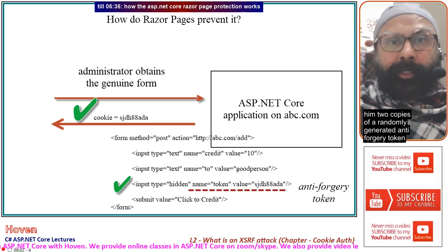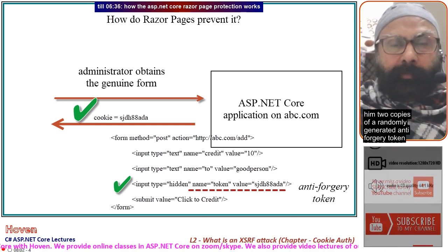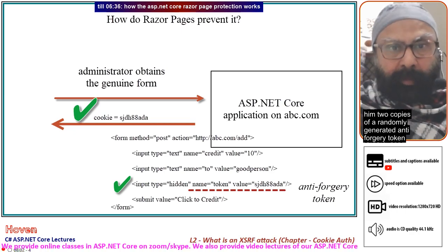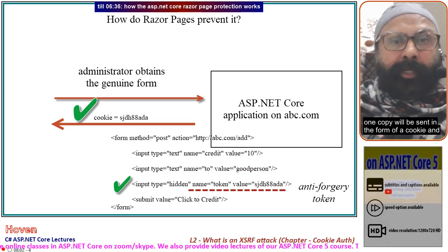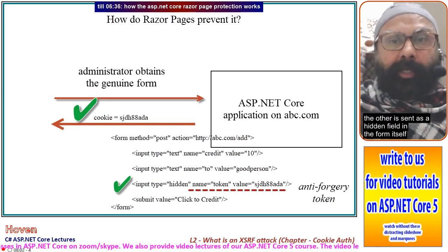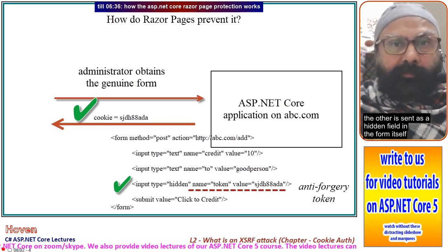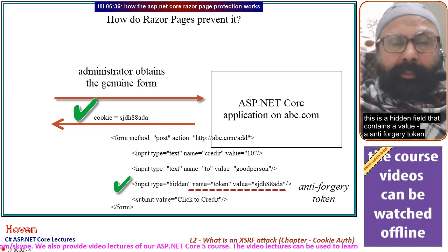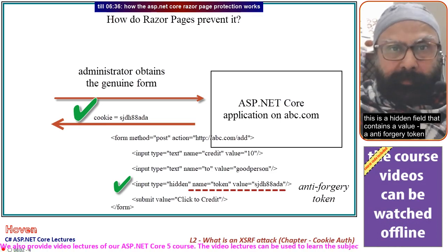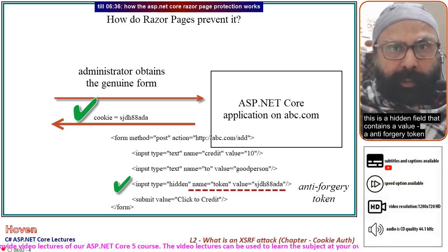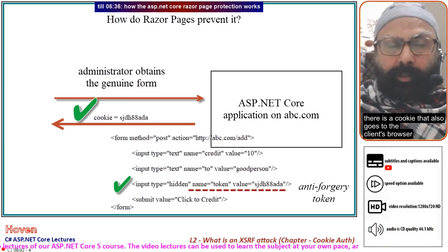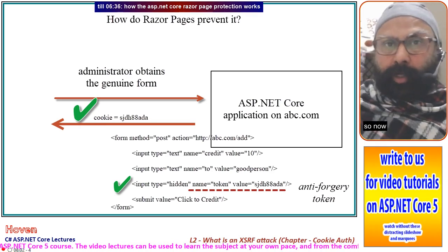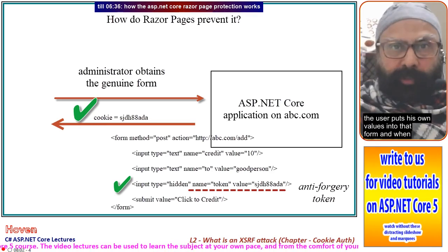The application sends two copies of a randomly generated anti-forgery token. One copy is sent in the form of a cookie, and the other is sent as a hidden field in the form itself. This hidden field contains the anti-forgery token value, and a cookie also goes to the client's browser. The user then puts his own values into the form.